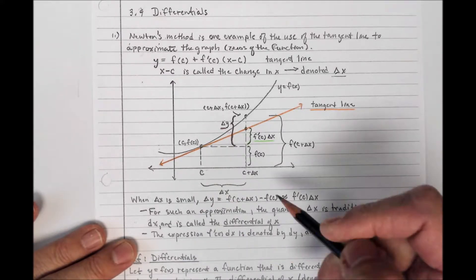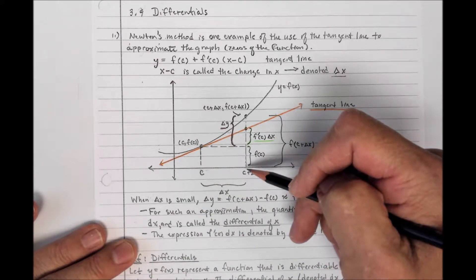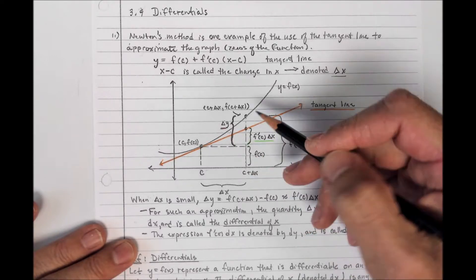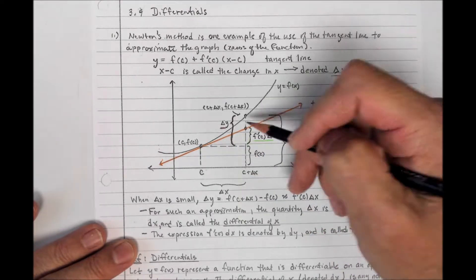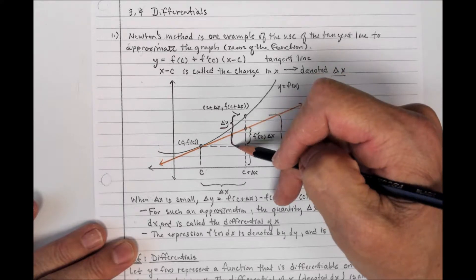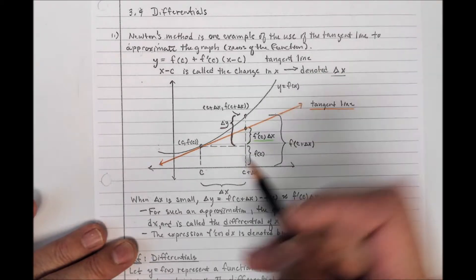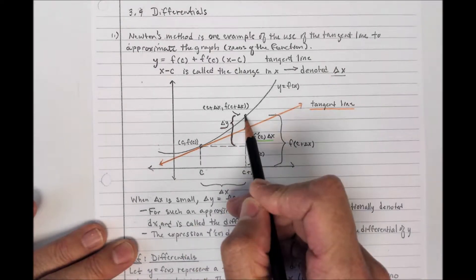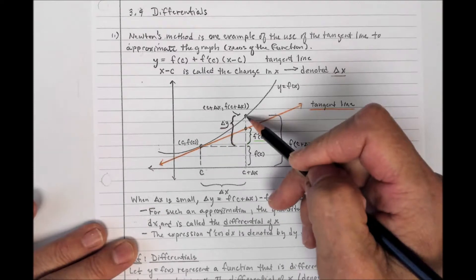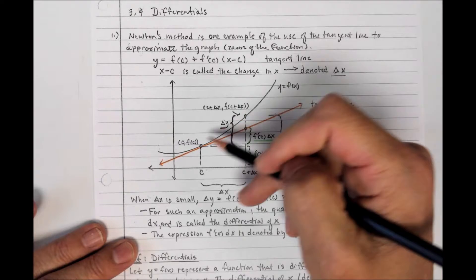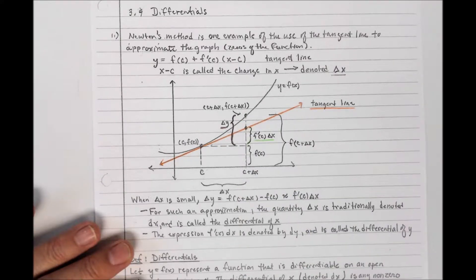What we're interested in is not only the change in the X values but also the change in the Y values, which is delta Y. Delta Y, denoted with this little brace here, is the difference in the Y values from the starting point to the point on the curve — and this is what we may be interested in finding.